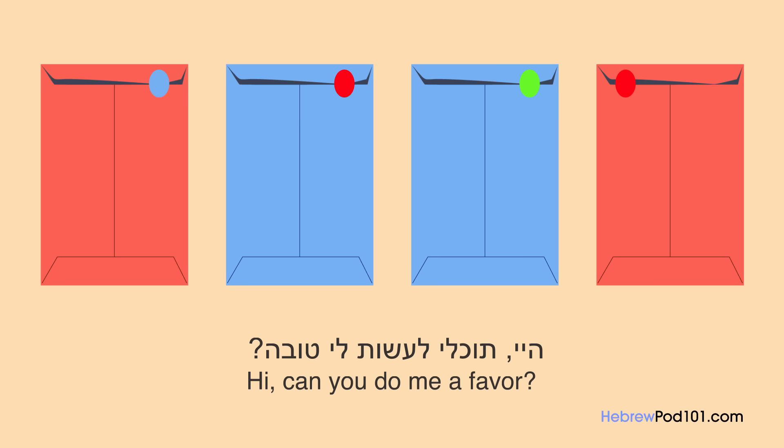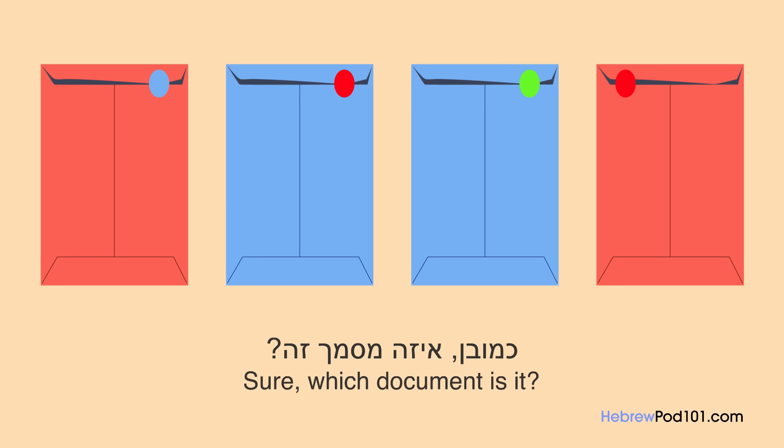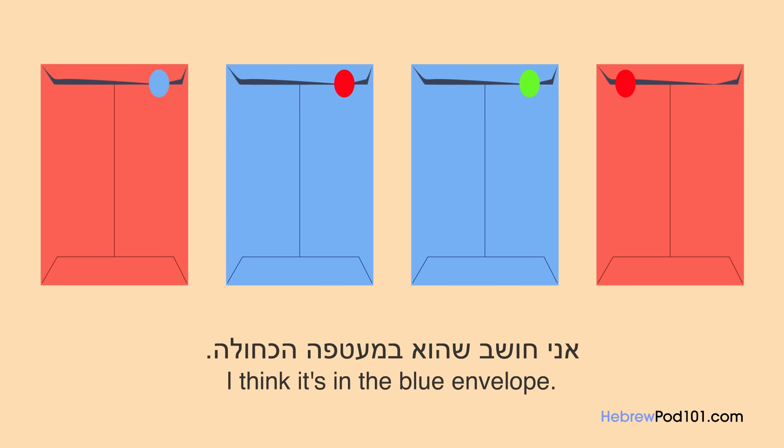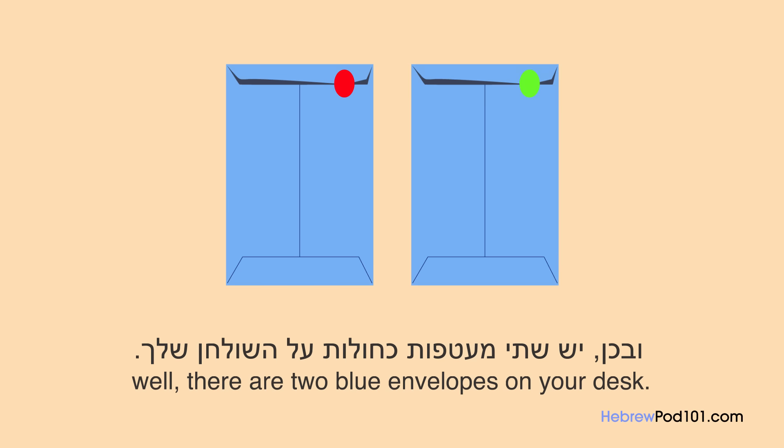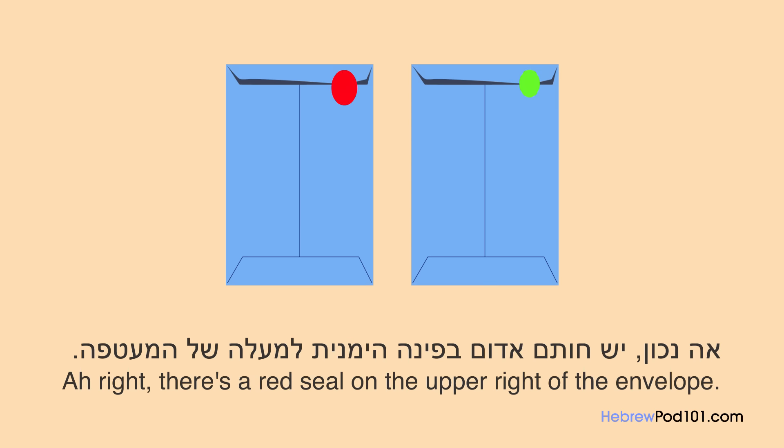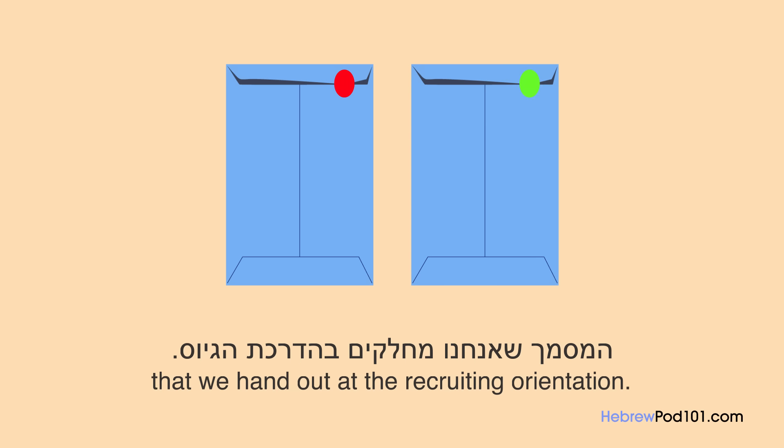היי, תוכלי לעשות לי טובה? יש מסמך על השולחן שלי ואני צריך שתמסרי אותו למחלקת המחירות. כמובן, איזה מסמך זה? אני חושב שהוא במעטפה הכחולה. במעטפה הכחולה? ובכן, יש שתי מעטפות כחולות על השולחן שלך. אה, נכון. יש חותם אדום בפינה הימנית למעלה של המעטפה. המעטפה עם החותם הירוק היא של המסמך שאנחנו מחלקים בהדרכת הגיוס.